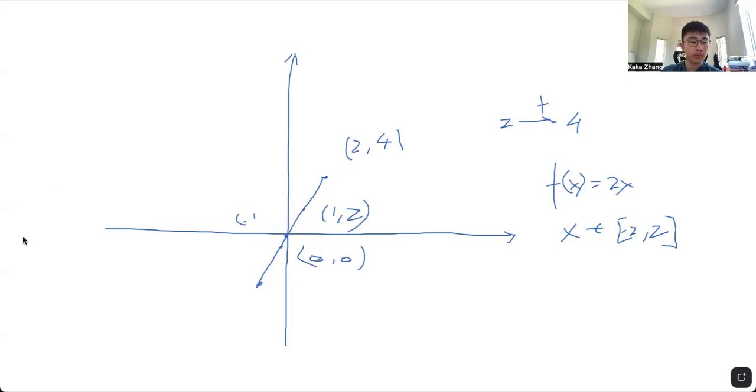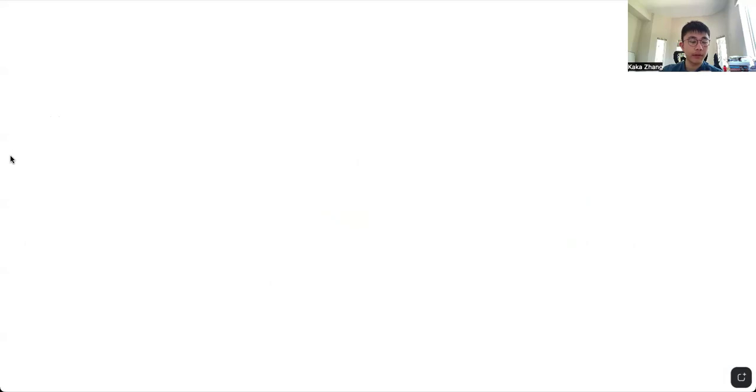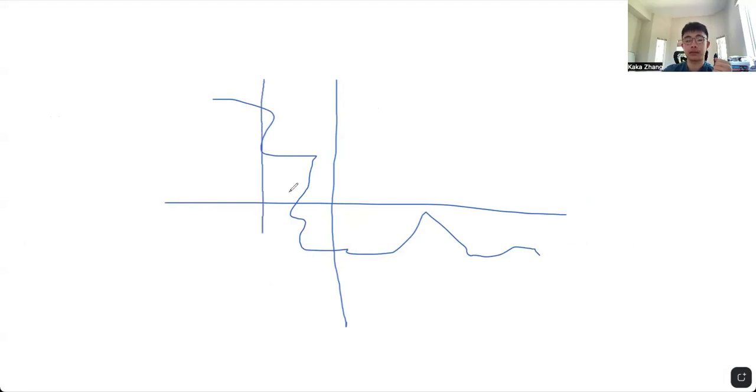Let's cover the vertical line test to see if something is a function. If we have some random segment or curve drawn on the coordinate plane, there is one easy way to test if it's a function: drawing a vertical line everywhere to see if it intersects the curve more than once.